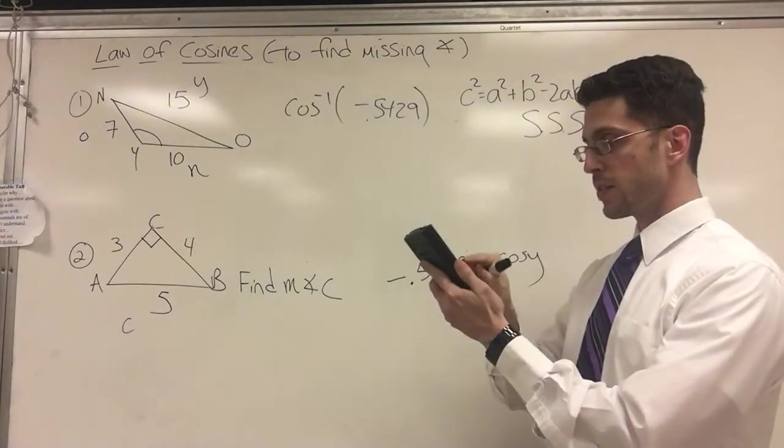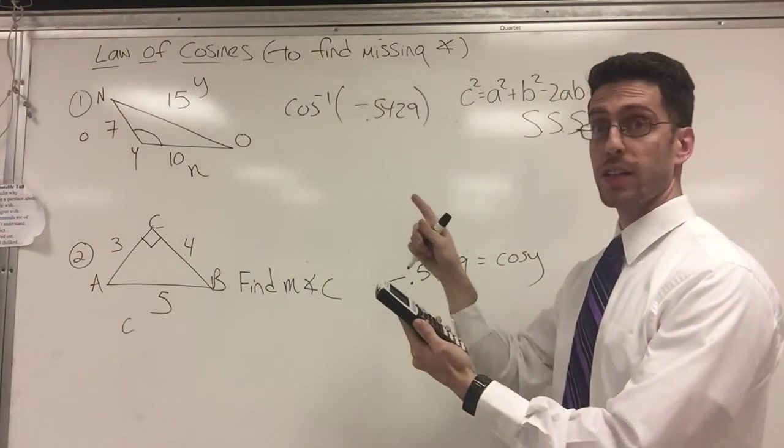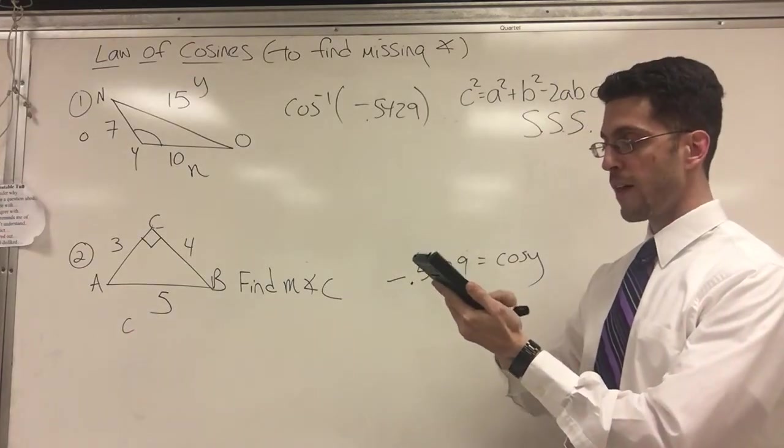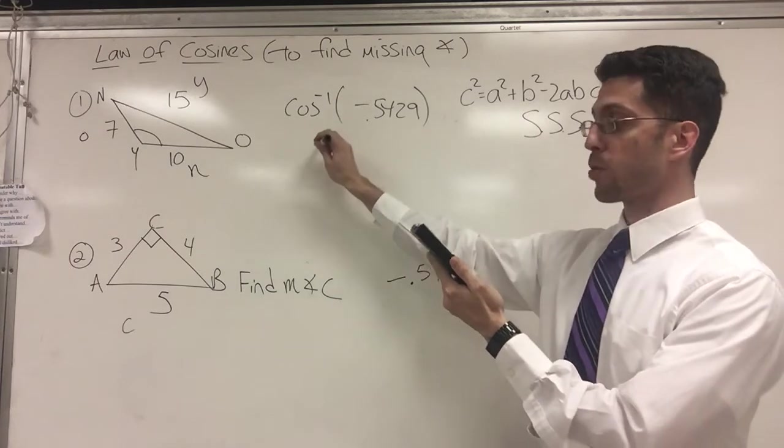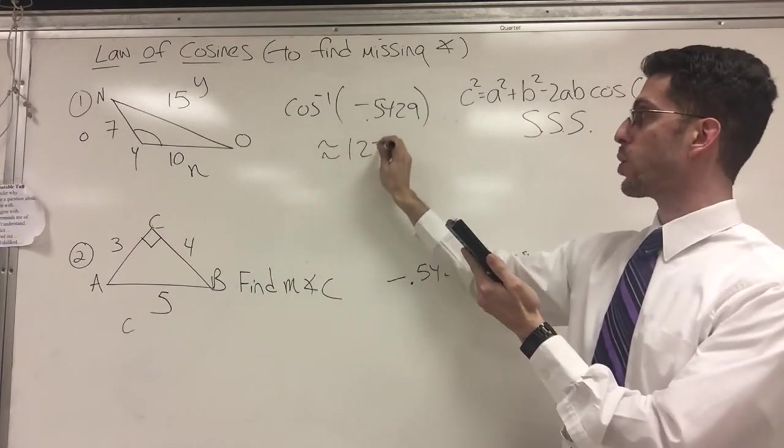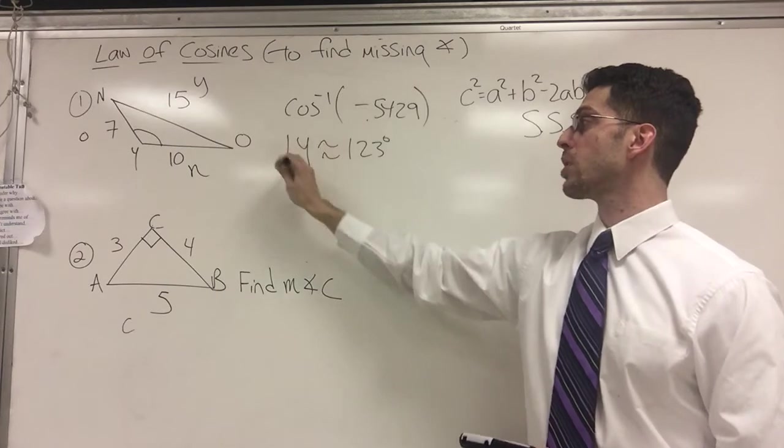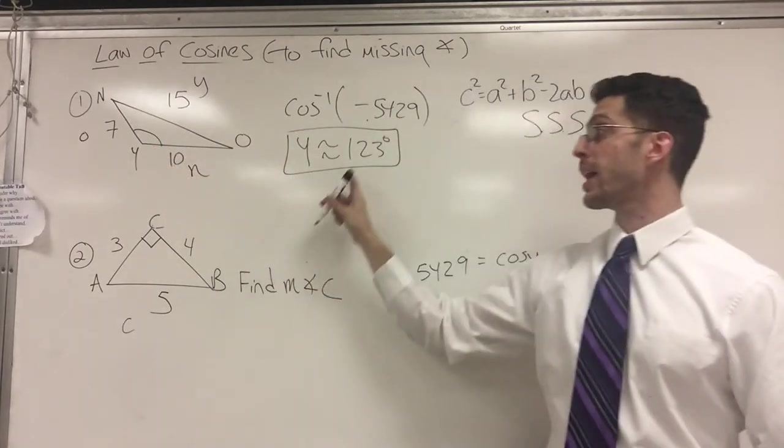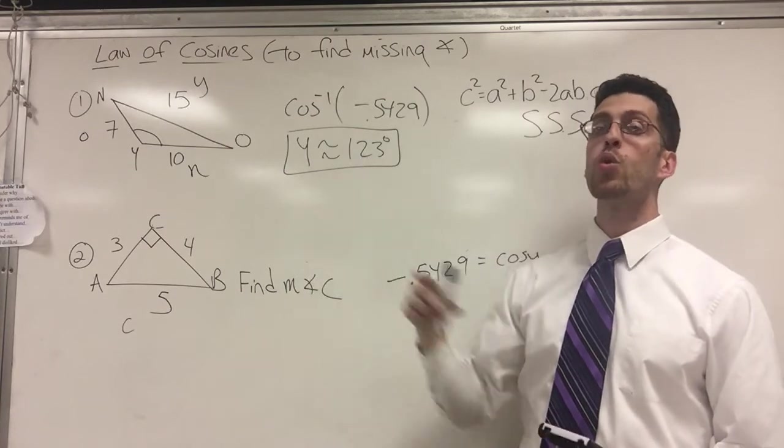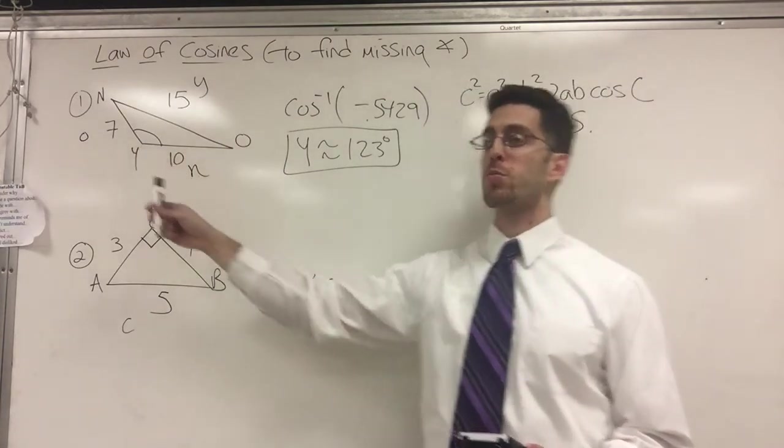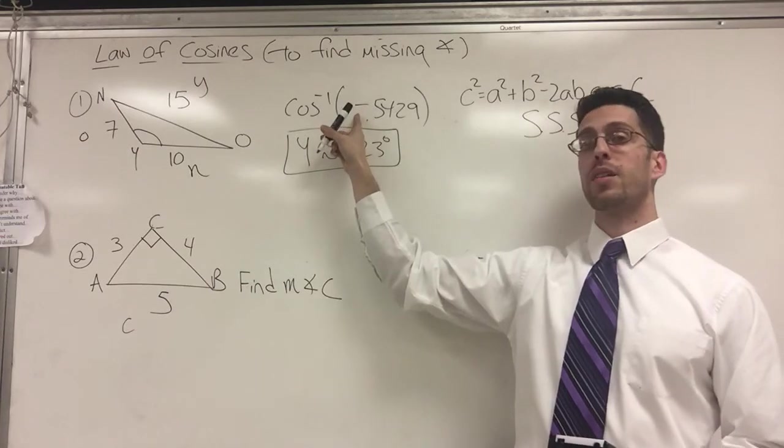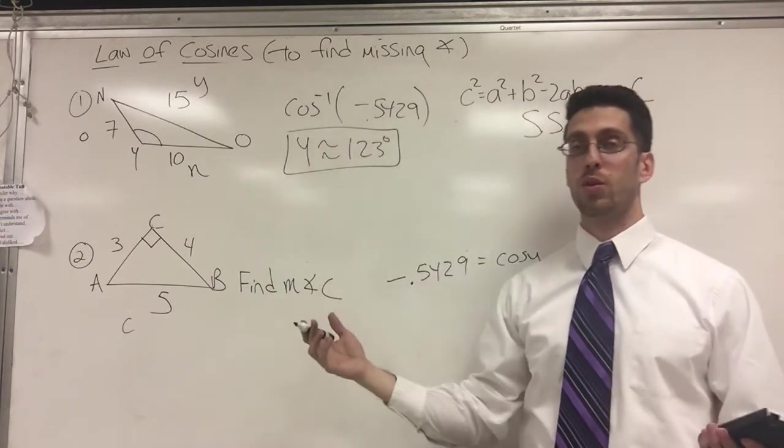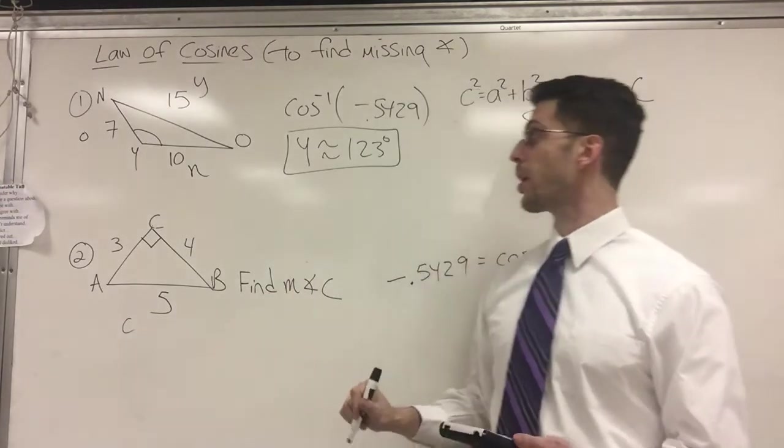So I'm going to press cosine inverse this number. Negative 0.5429. Press enter. And I get approximately 123 degrees. Y equals approximately 123 degrees. And this is an obtuse angle. I knew it was going to be obtuse, not because I drew it obtuse, but because I had a negative here. So don't panic if you get a negative. You'll just get an obtuse angle, which is fine.